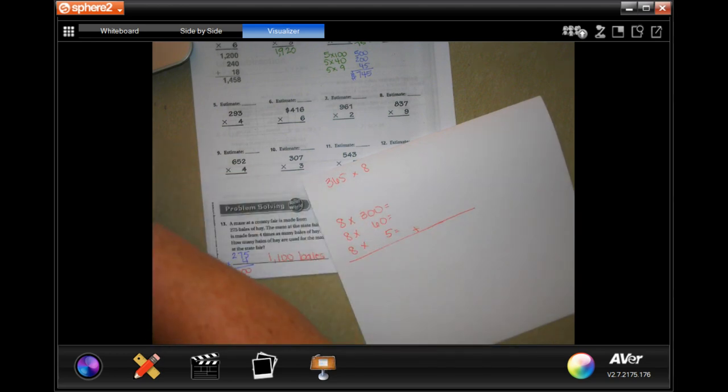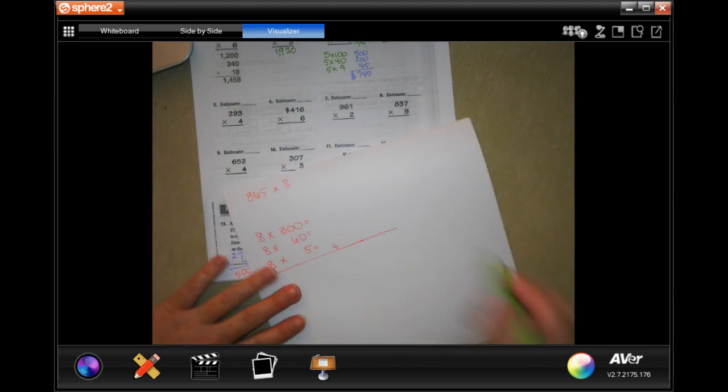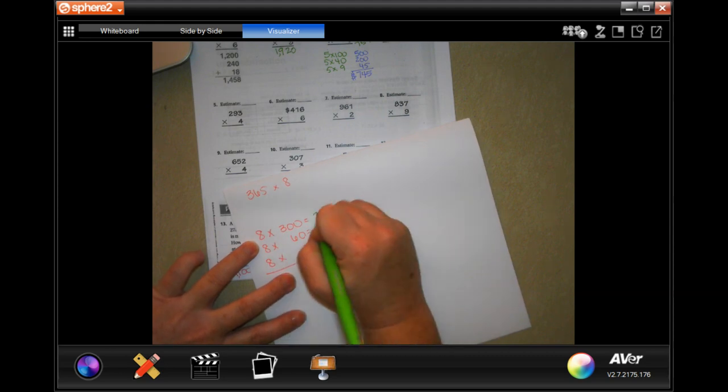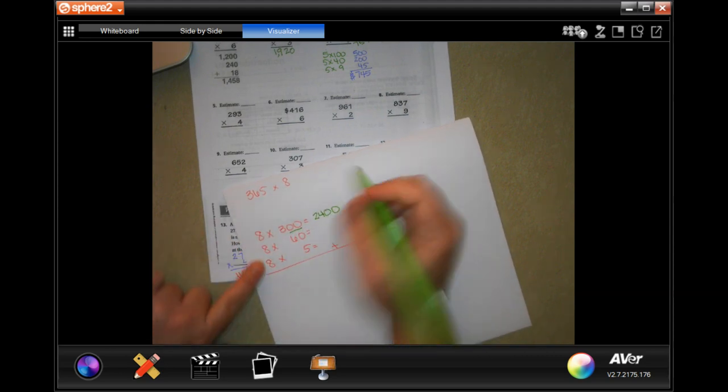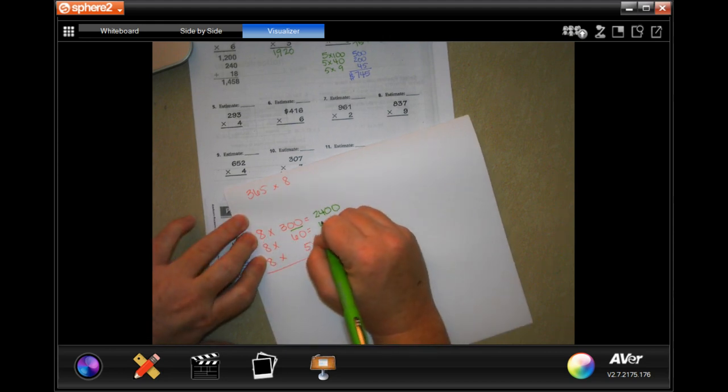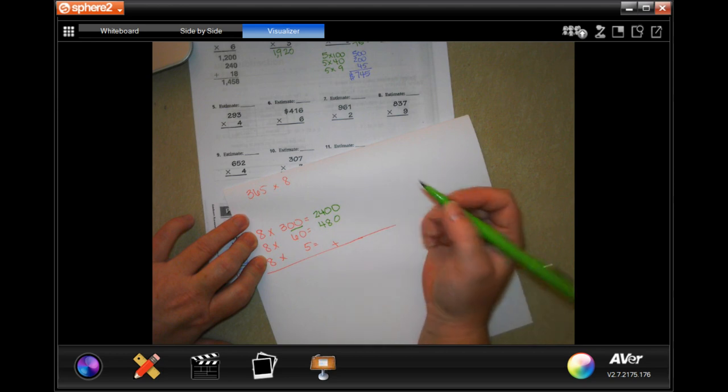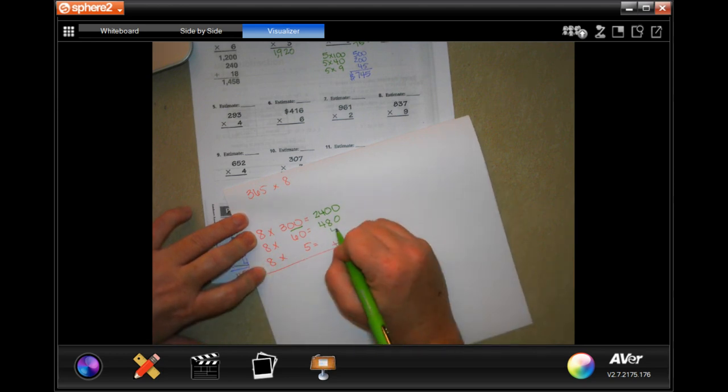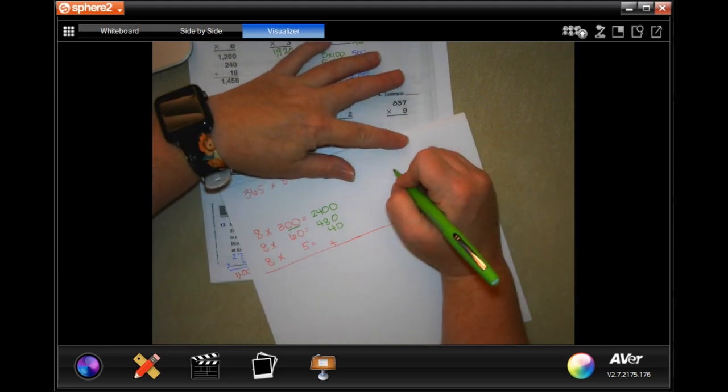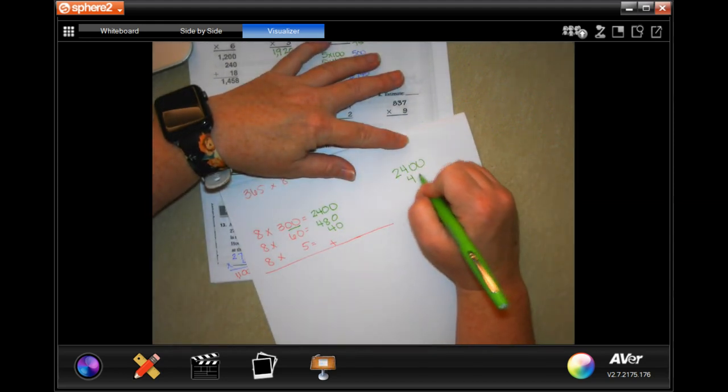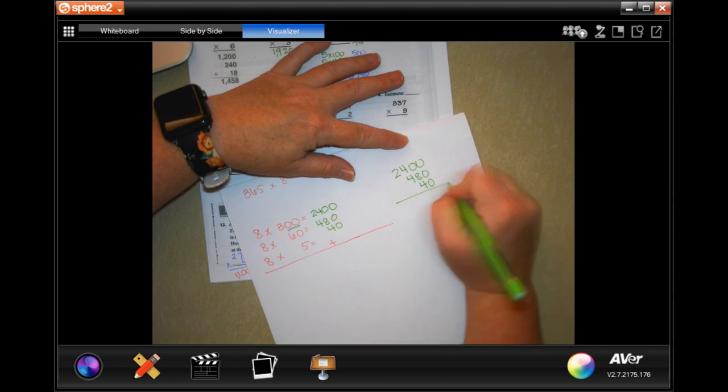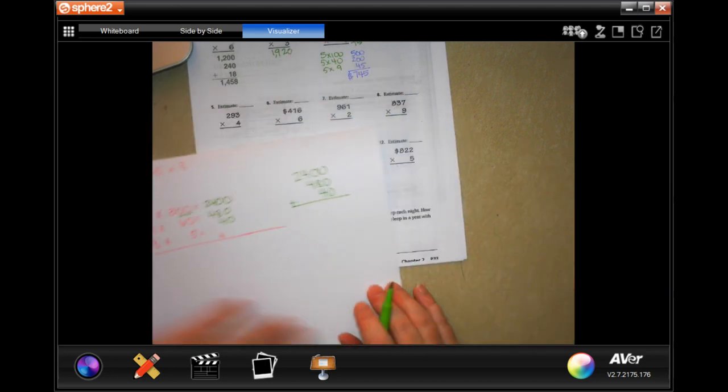All right. So 8 times 3 is 24, and then I'm going to add on those two zeros. 8 times 6 is 48, and I'm going to add on that zero. Honestly, I did not line up for columns, and 8 times 5 is 40. So I'm going to rewrite that. I did not line up for columns so that I can make it easy to add.